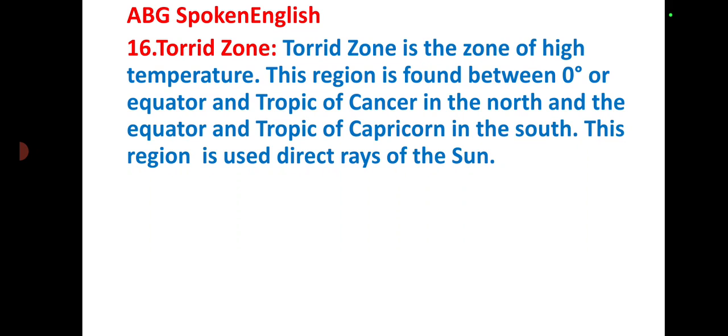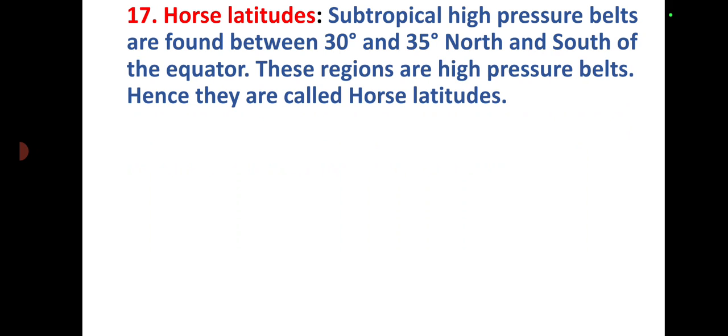Horse latitudes: Subtropical high pressure belts are found between 30 degree to 35 north and south of the equator. These regions are high pressure belts, hence they are called horse latitudes.